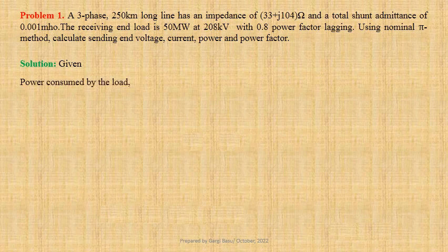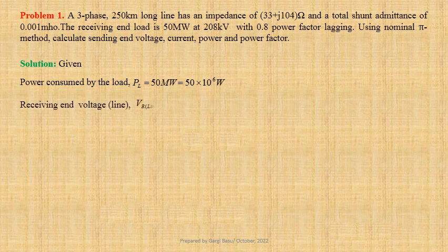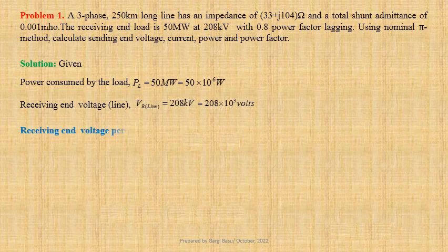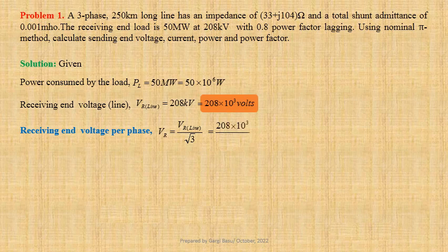Let us first write down the given data. Power consumed by the load, PL equals 50 megawatts, that is equal to 50 × 10⁶ watts. Line-to-line receiving-end voltage, Vr_line equals 208 kilovolts, that is equal to 208 × 10³ volts. For a star-connected system, receiving-end voltage per phase, Vr equals Vr_line divided by √3, that is equal to 208 × 10³ divided by √3, which gives us 120,089 volts.